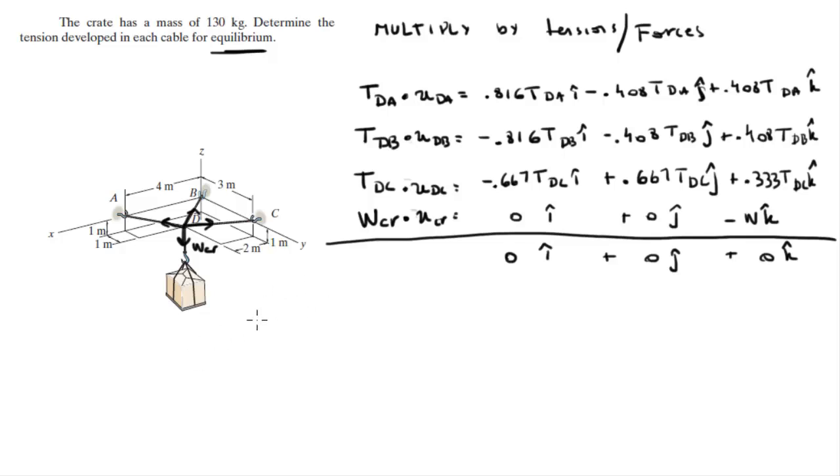So just by looking at this table that we built, we can already form the three equations, the system of three equations and three variables that will help us solve the problem. You got to add the i's together, the j's together, and the k's together. So the first one is in the i's: 0.816 TDA minus 0.816 TDB minus 0.667 TDC plus 0 is equal to 0.